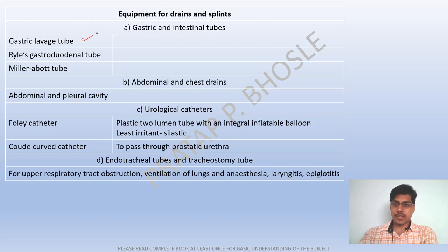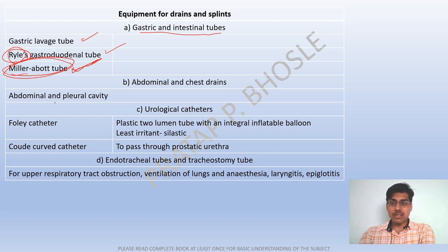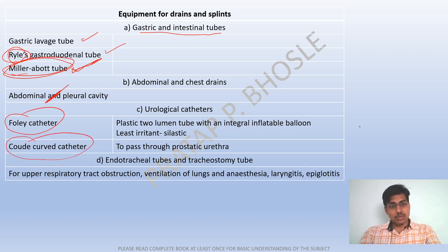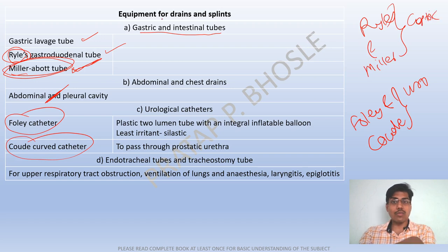Gas equipment for drains and splints includes gastric and intestinal tubes: gastric lavage tube, Ryle's tube, gastroduodenal tube, and Miller-Abbott tube. Remember the Miller-Abbott tube is for endoscopy of gastric and intestinal areas. Don't confuse Ryle's and Miller-Abbott tubes with the optical instruments. Foley catheter and Coudé catheter are important urological catheters.